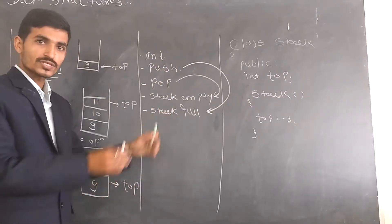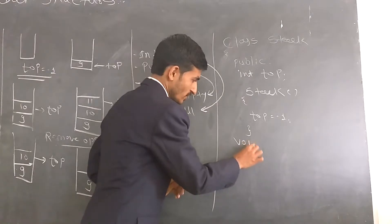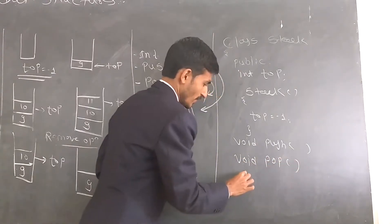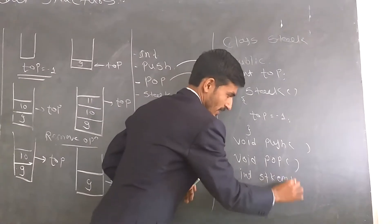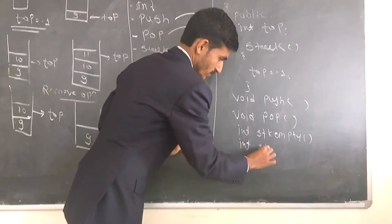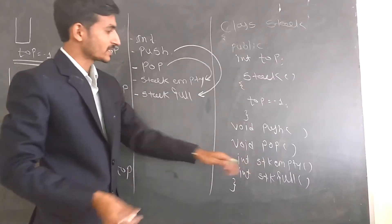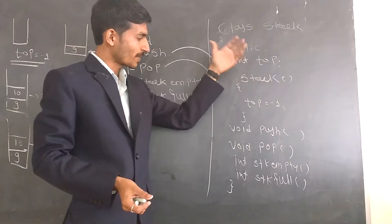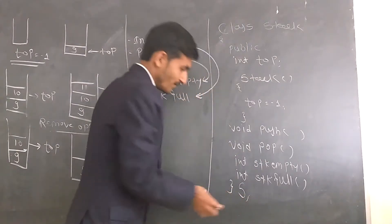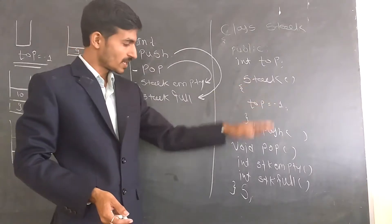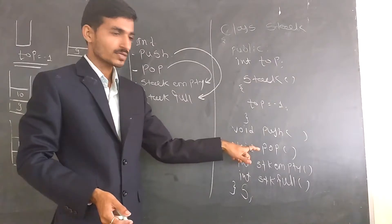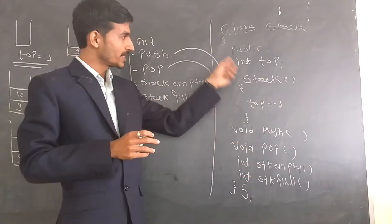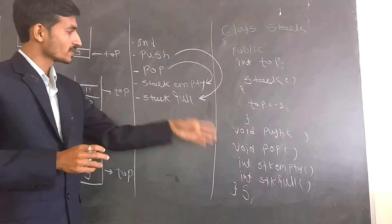Then we have to use these methods or operations that we implement inside the program. I will write functions void push and void pop. We also have to check conditions whether the stack is empty or stack is full. So these are the members inside the class — the operations to perform on a stack. When we create a class object, the constructor is automatically called and members will be initialized. This is also called encapsulation, where we encapsulate data members and member functions inside a class.